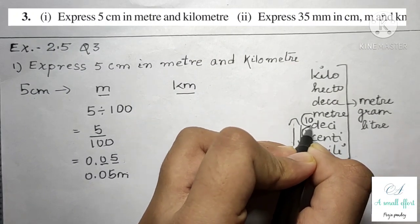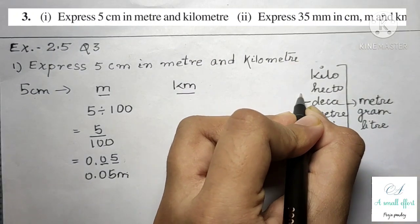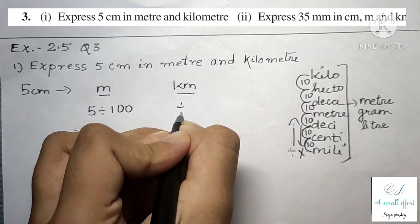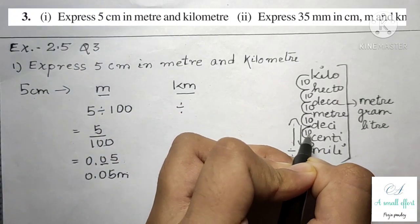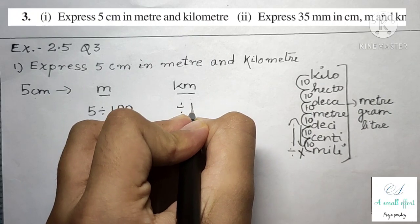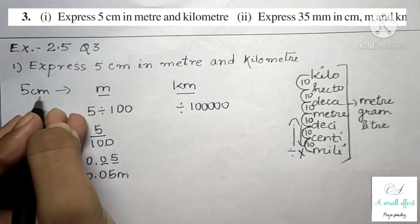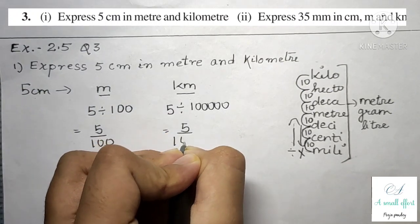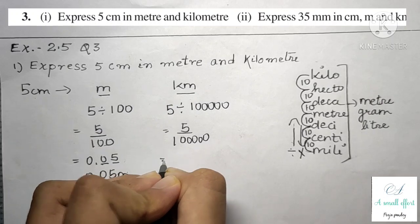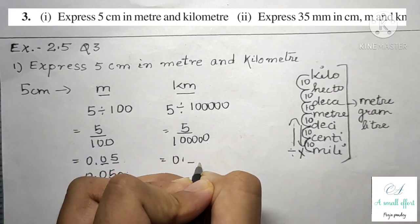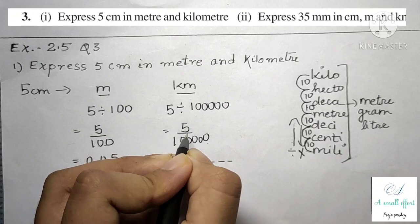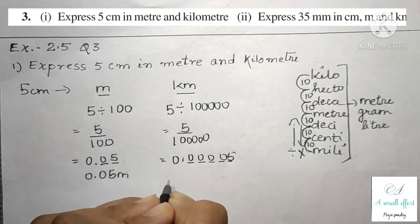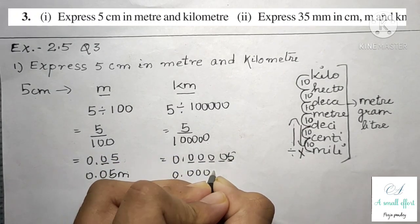Now to convert 5 centimeter into kilometer: from centimeter, we go through decimeter, meter, decimeter, hectometer, and then kilometer — that is five steps of 10, giving us five zeros, which is 100000. So 5 divided by 100000 — we have five blanks but only one digit, so we fill the rest with zeros: 0.00005 kilometer.